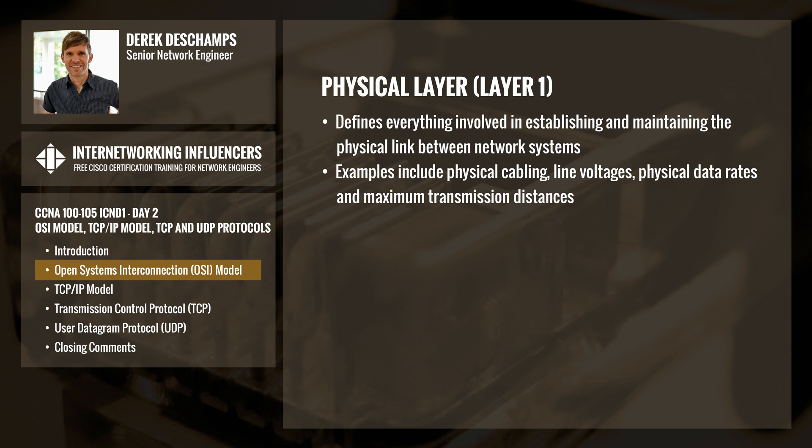The physical layer, or layer 1, defines everything involved in establishing and maintaining the physical link between network systems. This includes the physical cabling, line voltages, physical data rates, and maximum transmission distances.